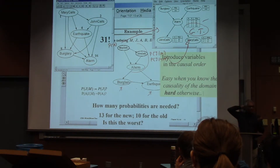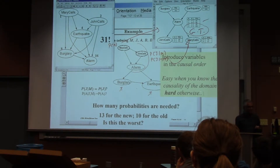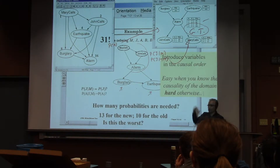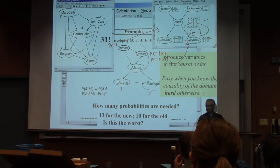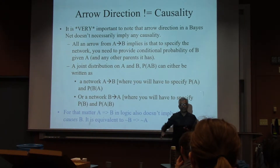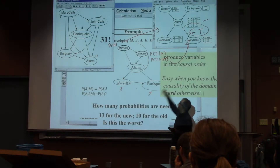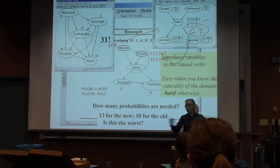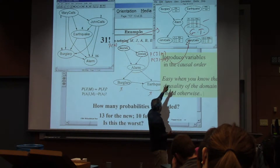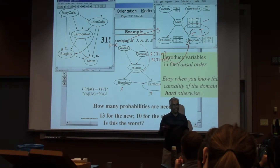If you introduce the variables in the causal order, you are actually in bad shape — because then that means you know the causation in the world. Sometimes you do, especially in biology where you don't know what causes what. If you are trying to help your biology expert put together a Bayesian network for their domain, they have to figure out what the causality is. Arrow direction is not causality — remember this. Sometimes arrow direction can be causality, but generally it doesn't have to be causality at all. Arrow direction only means probability factorization.